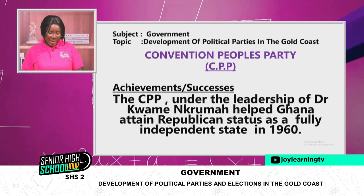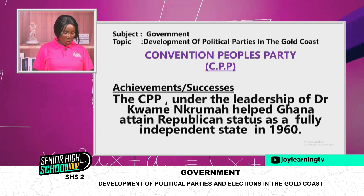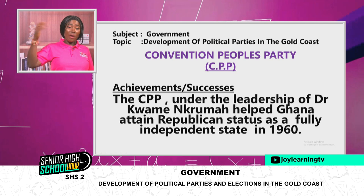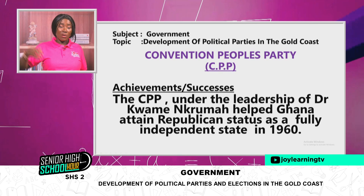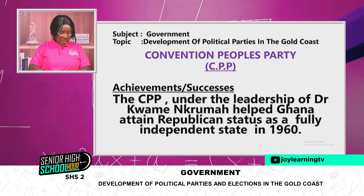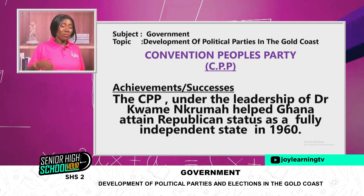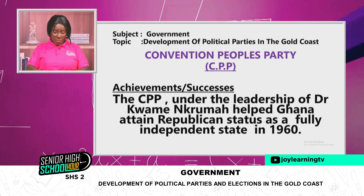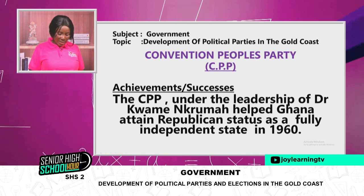The CPP under Dr. Kwame Nkrumah helped Ghana attain republican status as a fully independent state in 1960. They received the royal assent in February 1957, and he petitioned to the British governor that the system would become fully a republican state, where the people would vote for their own leaders and make decisions without outside interference.